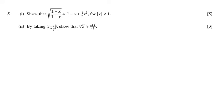Okay, part two then says by taking x equals 2/7, show that the root of 5 is approximately 111 over 49. So even if we're not quite sure where this question is going, we can at least sub in the x equals 2/7 and see what happens. So that's what I'm going to do.